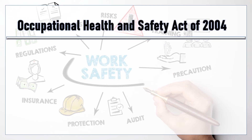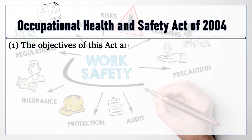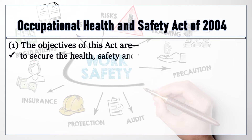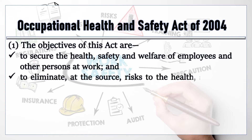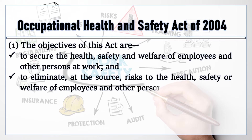We will start with the Occupational Health and Safety Act of 2004. The objectives of this Act are: 1. To secure the health, safety and welfare of employees and other persons at work. 2. To eliminate, at the source, risks to the health, safety or welfare of employees and other persons at work.